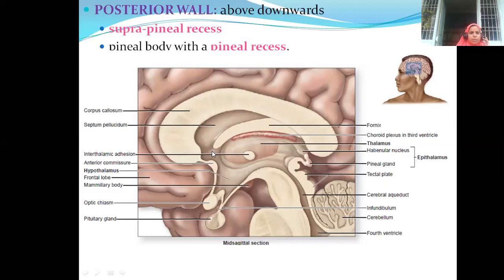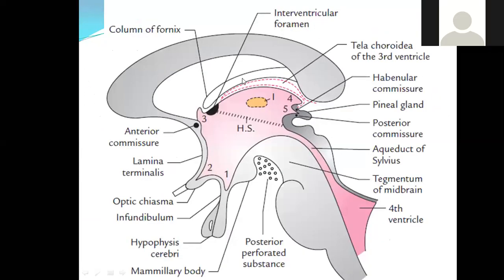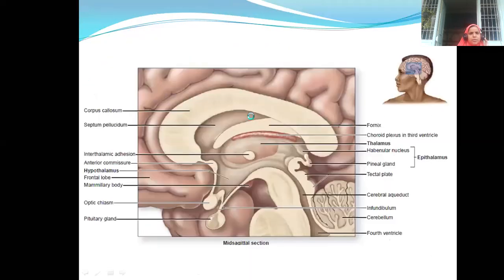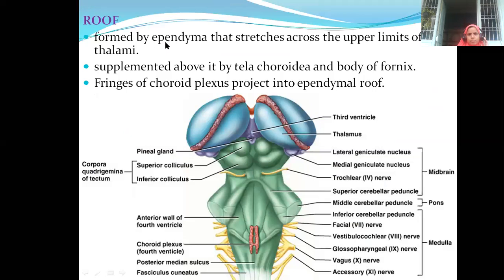Now, how is the roof formed? The column of fornix below which you find the capillary network — you call it tela choroidea. The roof is formed by ependyma stretching across the upper limit of the two thalami. This is one thalamus, and this is the other thalamus.